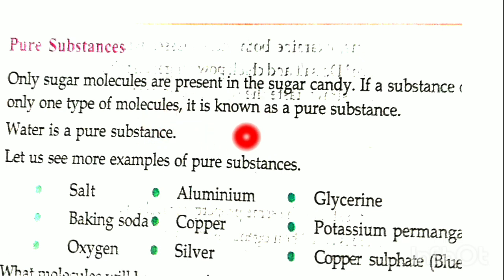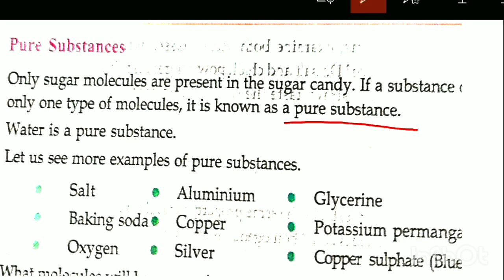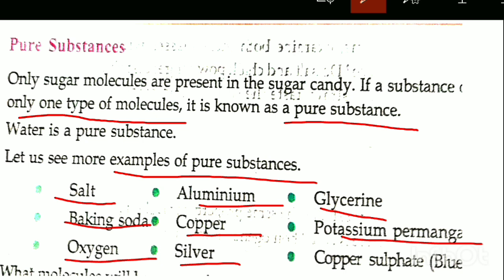Pure substance is only one type of molecules. Water is a pure substance — water is one type of substance. Examples of pure substance: salt, baking soda, oxygen, aluminum, copper, silver, glycerin, potassium permanganate, copper sulfate.